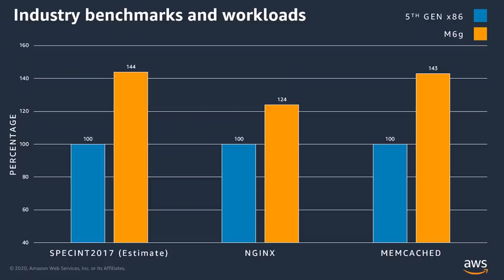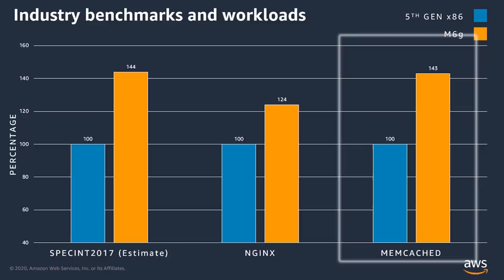During the 2019 re:Invent announcement I blogged Graviton 2 benchmarks showing M6G up to 40% faster than x86-powered M5s. As examples I used SpecInt 2017, Spec Floating Point, and Memcached.